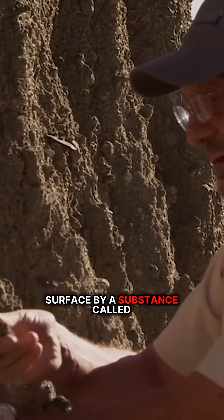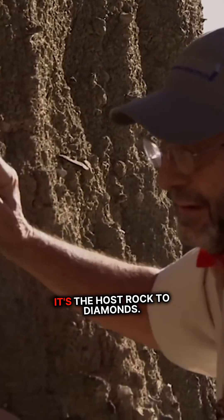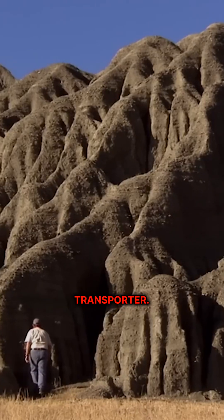Luckily, they're fast-tracked to the surface by a substance called kimberlite. Kimberlite is a rock, the host rock to diamonds. Even though the diamonds are not forming the rock, it's the transporter.